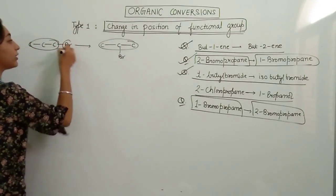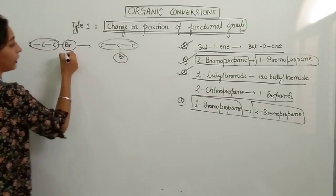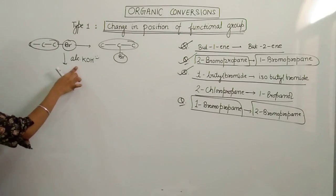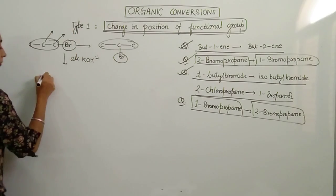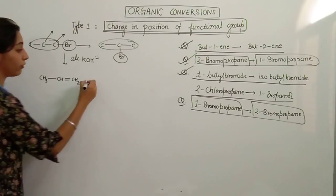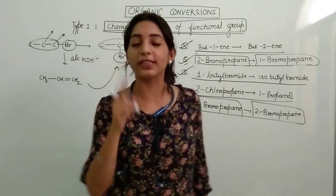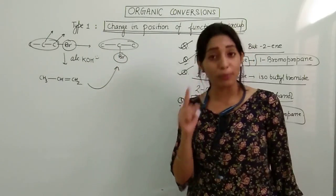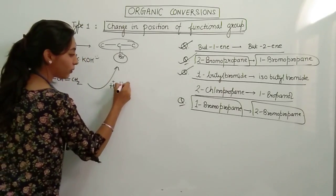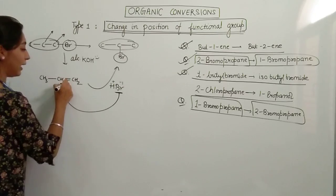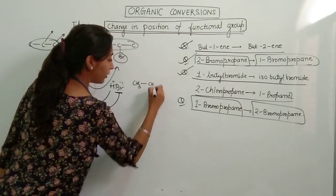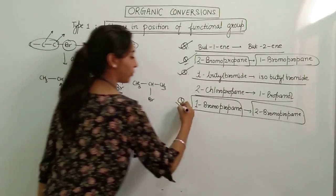What do we need to do? We need to first make alkene. Let's add alcoholic KOH. If you add alcoholic KOH, what will happen? Br goes from this carbon, H goes from this carbon. We get CH3-CH=CH2. Now what do we need? We need the Br to be in the centre. Now if Br has to be in the centre, we don't do anti-Markovnikov's, we rather do Markovnikov's. If I add HBr, Markovnikov's is without peroxide. So Br minus goes to the carbon with less hydrogen. H goes to carbon with more hydrogen. And we get this product. That's it.